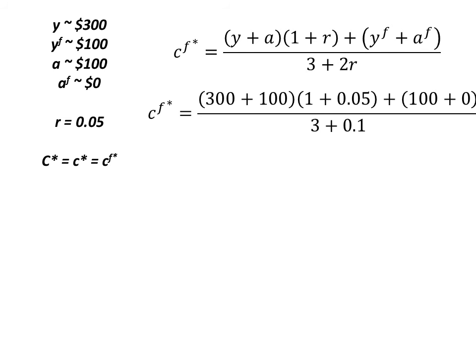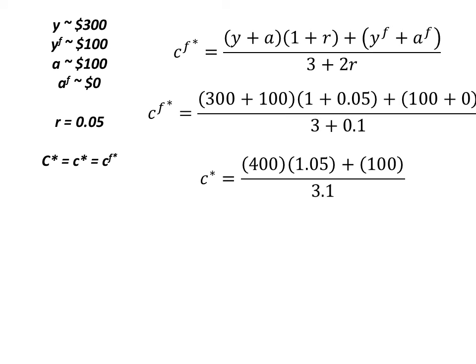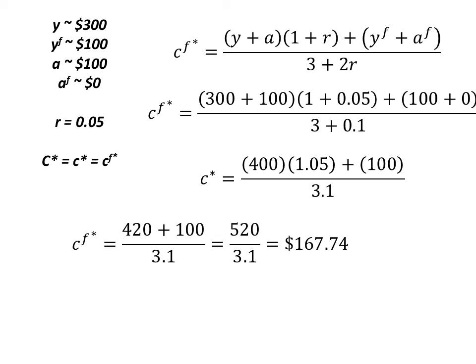Just like the last example, now we plug in our data. So we have 300 plus 100 times (1+0.05) plus 100 plus 0, divided by (3+0.1). Combining terms we get 400 times 1.05 plus 100 divided by 3.1, which is 420 plus 100 divided by 3.1, equal to 520 divided by 3.1, which equals 167.74.